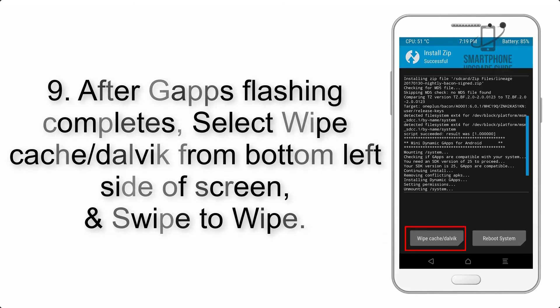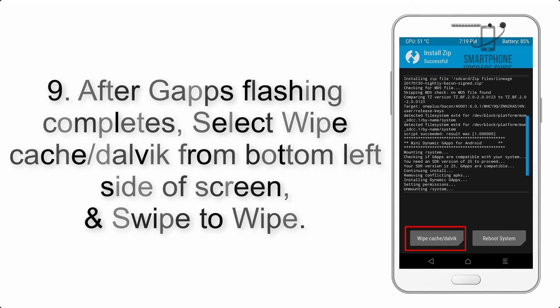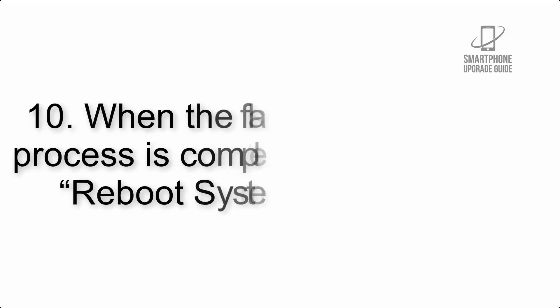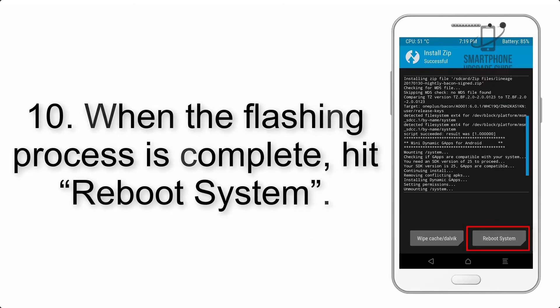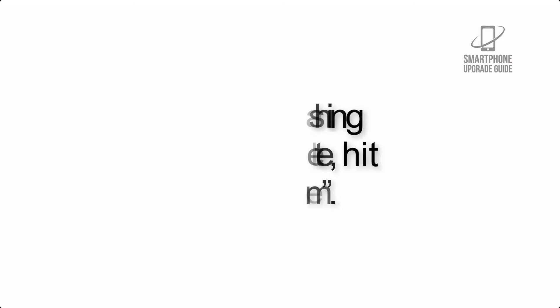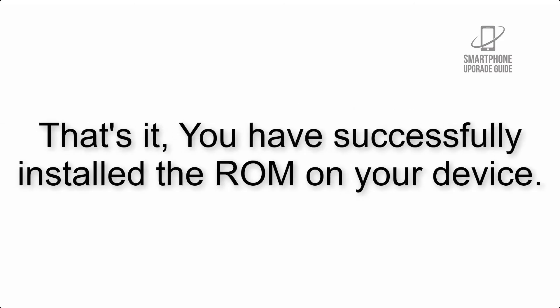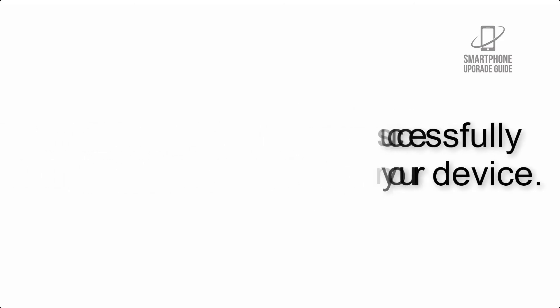Step 9: After GApps flashing completes, select Wipe Cache and Dalvik from the bottom left side of the screen and swipe to wipe. Step 10: When the flashing process is complete, hit Reboot System. That's it — you have successfully installed the ROM on your device.